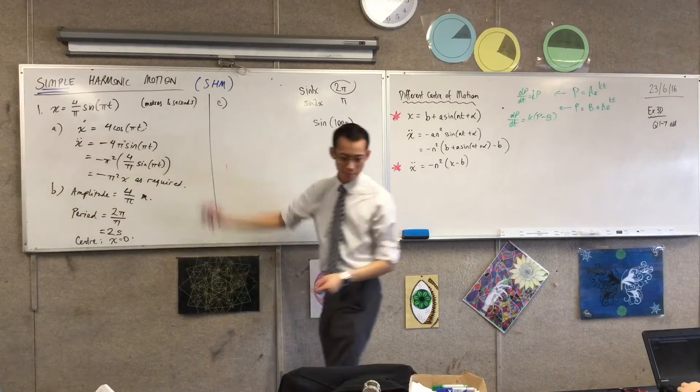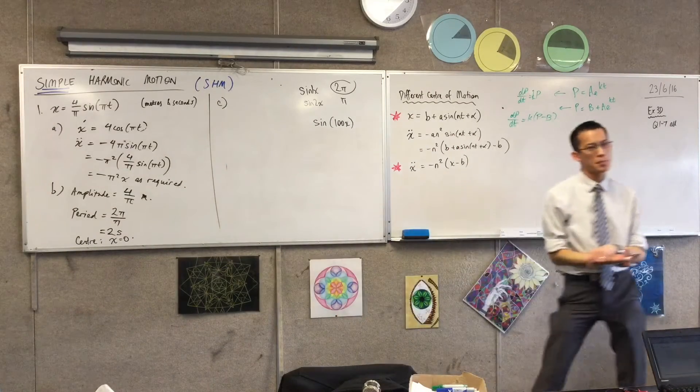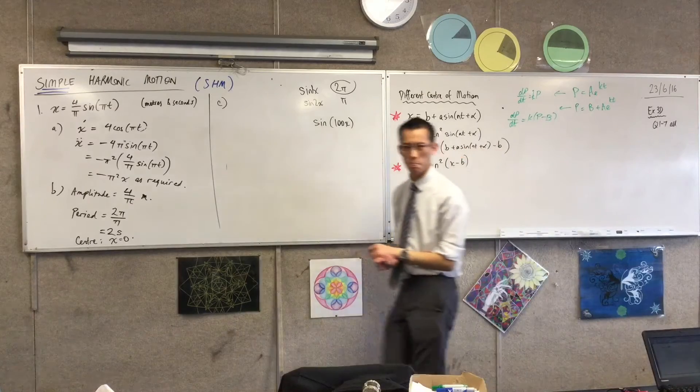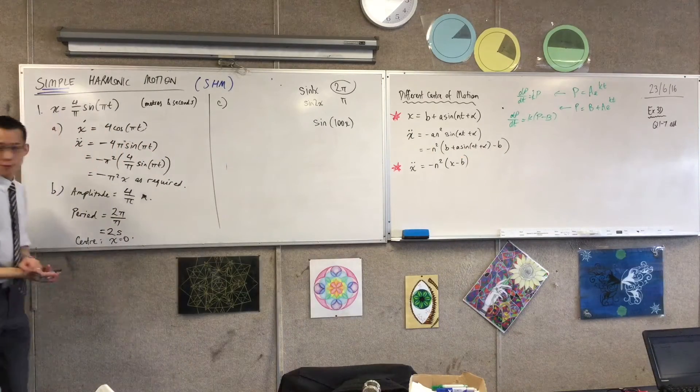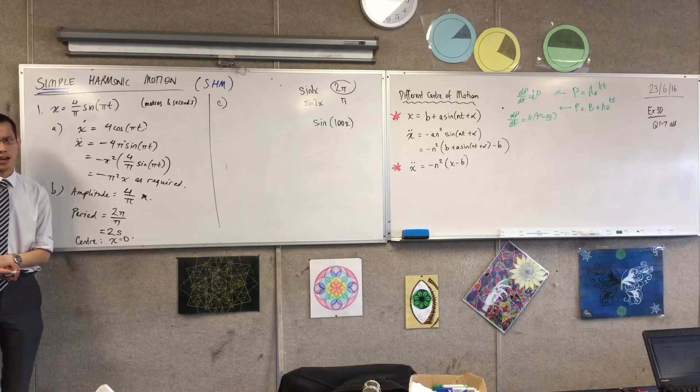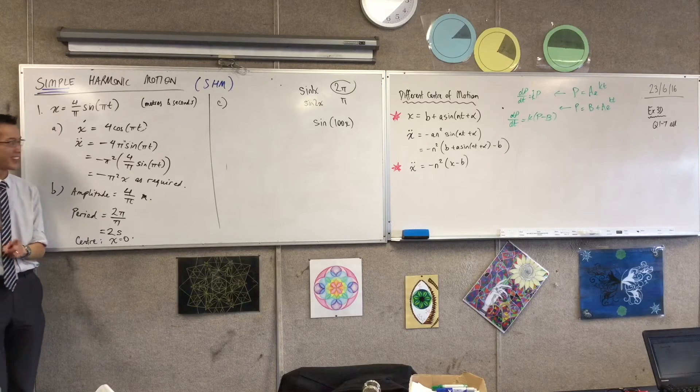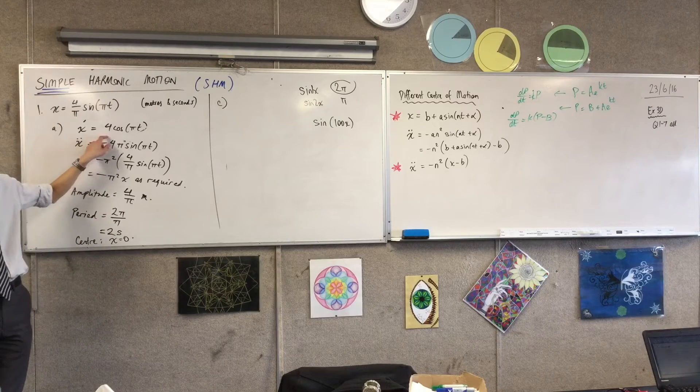Let's go to C. So, maximum speed. How do I work out maximum speed? Where's that come from? I've already differentiated enough times, haven't I? Only two times is enough. There's my velocity function right there, okay?